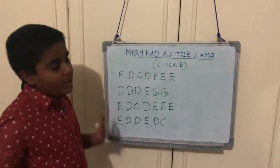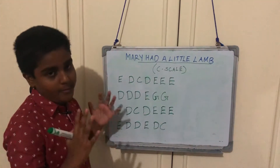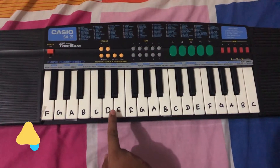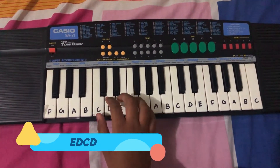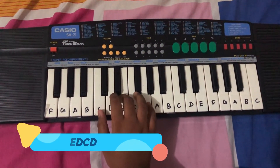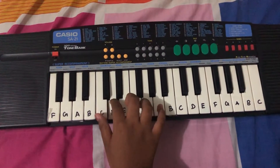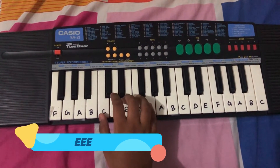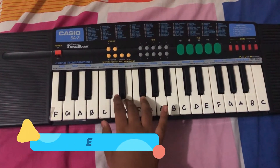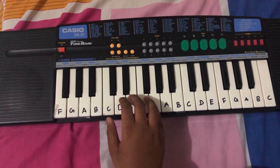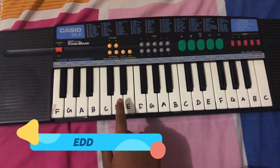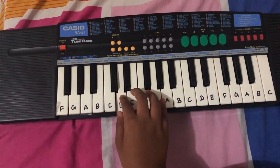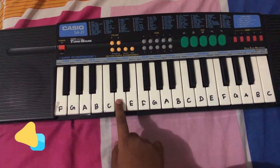So this is the notes of 'Mary Had a Little Lamb.' Next line: E D C D, then again three times E E E, then again E D D, E D D, then E D C, E D C.